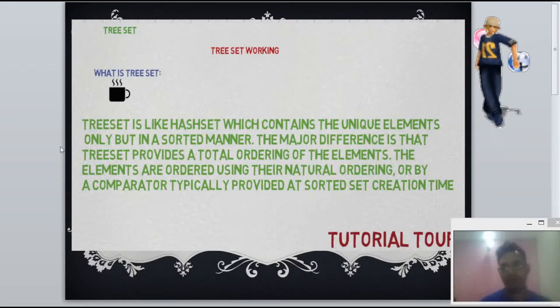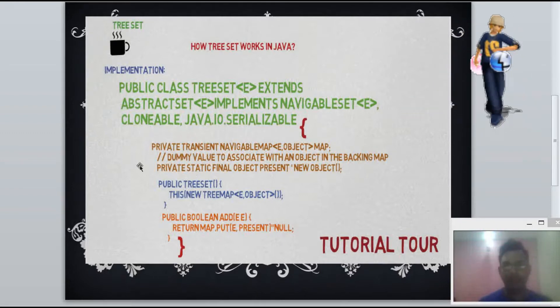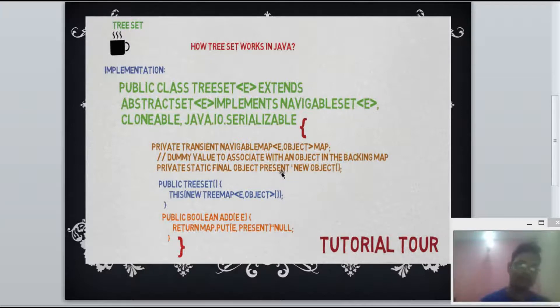Let's go through implementation part - how it is implemented. If we look into the TreeSet API in rt.jar, we will find this kind of code: TreeSet extends AbstractSet, implements NavigableSet, Cloneable and Serializable. It creates transient NavigableMap object and one dummy object private static final object with reference variable present.